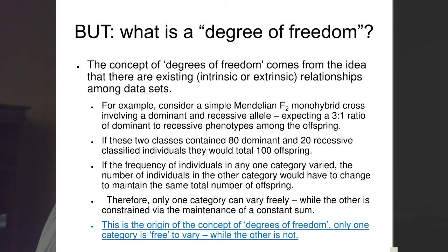The point is, if the frequency of individuals in any one category varied, the other individuals within the category have to change to maintain the same total number of offspring. Therefore, only one category can vary freely—this is the idea of degrees of freedom. Obviously, if you have an F2 Mendelian cross, how many categories are there? Two: dominant and recessive. Therefore, your degrees of freedom, if only one can vary, is two minus one. Degrees of freedom is one.